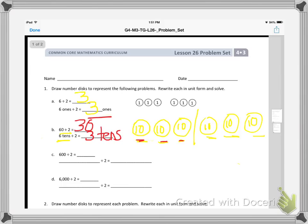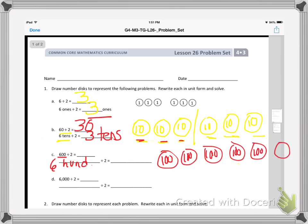And I do the same thing for 600. This 600 here is worth 600, so I write the word. And then I make my hundreds disks: 100, 200, 300, 400, 500, 600. I'm putting them in 2 groups. I'm still going to have 3 in each group.